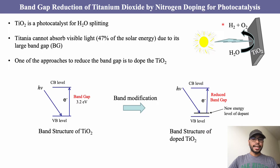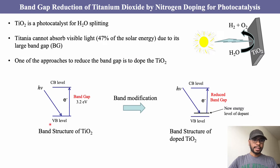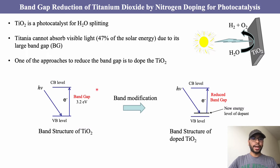Unfortunately, titanium dioxide cannot absorb the visible light of the solar spectrum, which is about 47%. That is because titanium dioxide has a wide band gap. This is the valence band of titanium dioxide and this is the conduction band of titanium dioxide. The gap between the valence band and the conduction band is called the band gap, which is about 3.2 electron volts for titanium dioxide.